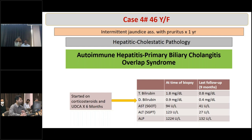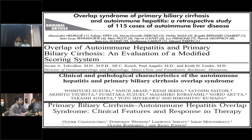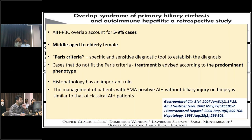Several studies documented that AIH-PBC overlap syndrome accounts for 5 to 9% of cases, predominantly affecting middle-aged to elderly females. Paris criteria is a specific and sensitive diagnostic tool. For cases not fitting Paris criteria, treatment is advised according to the predominant phenotype, and therefore histopathology has an important role.